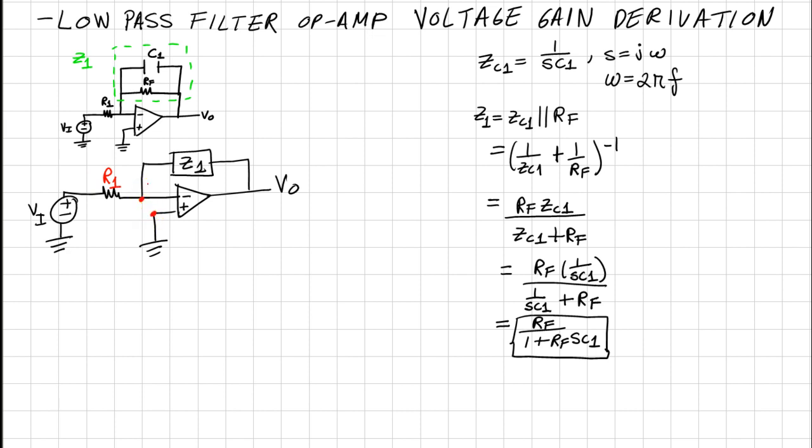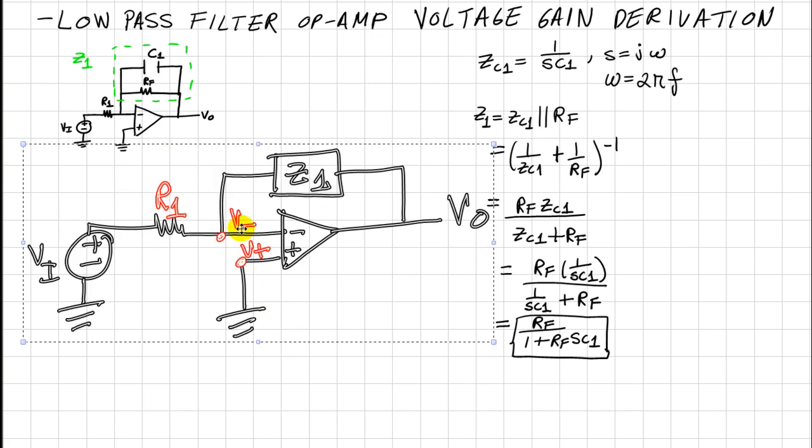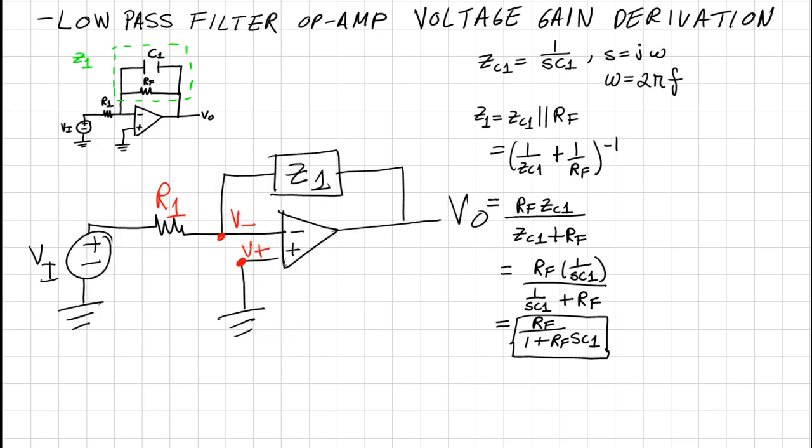So let's go ahead and apply the rules we know. That's V- inverting, V+ non-inverting, and we also have Iin equal to zero. We can draw the other currents I1 and I2.